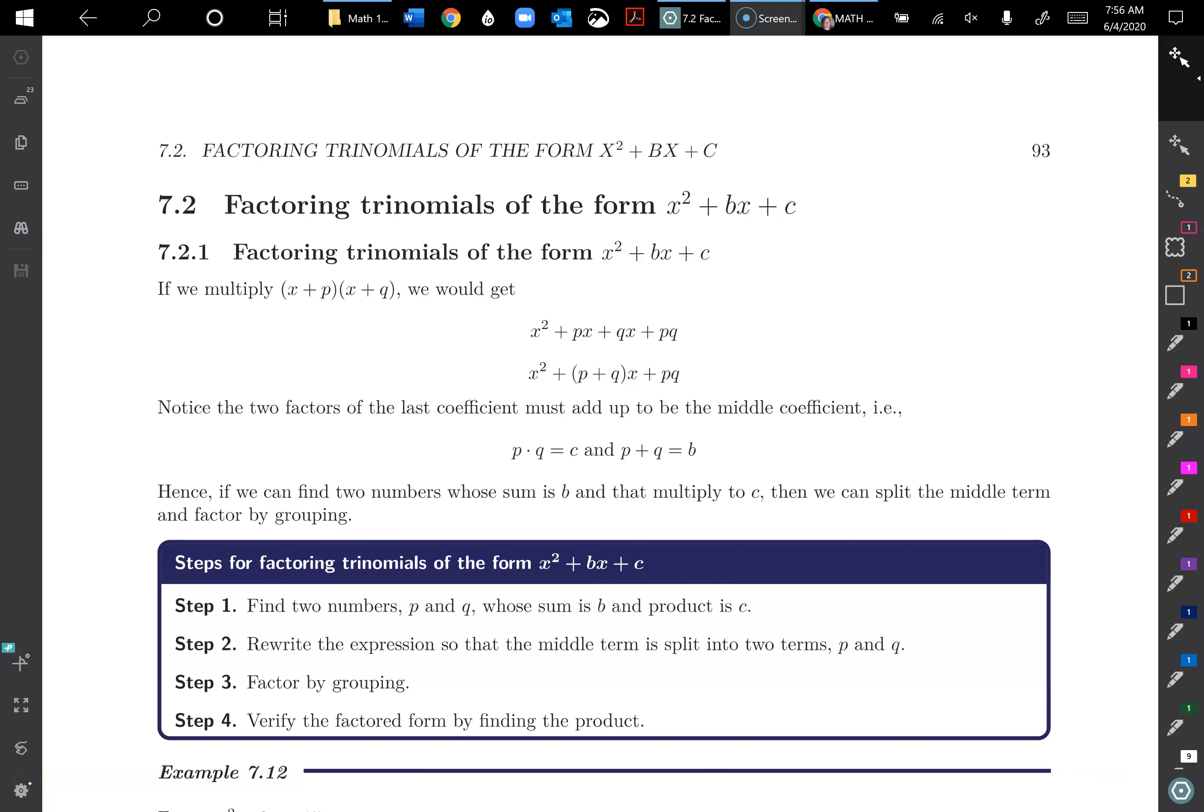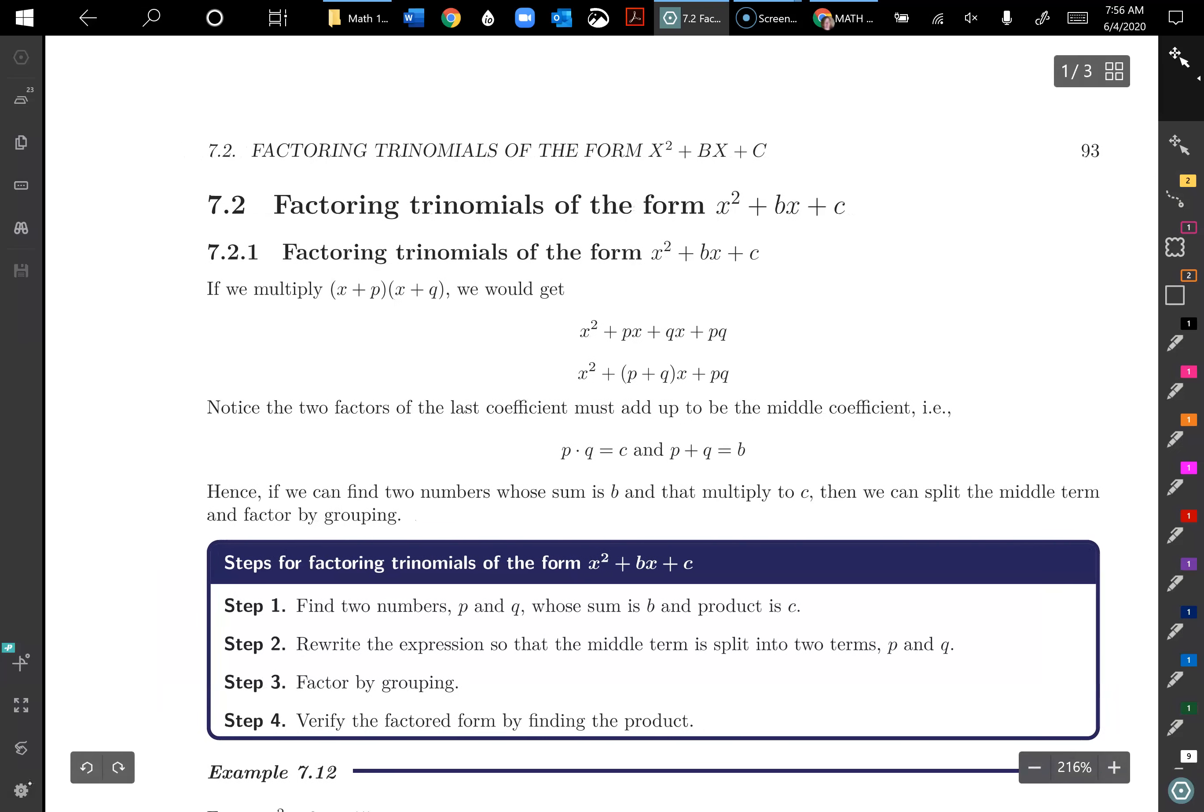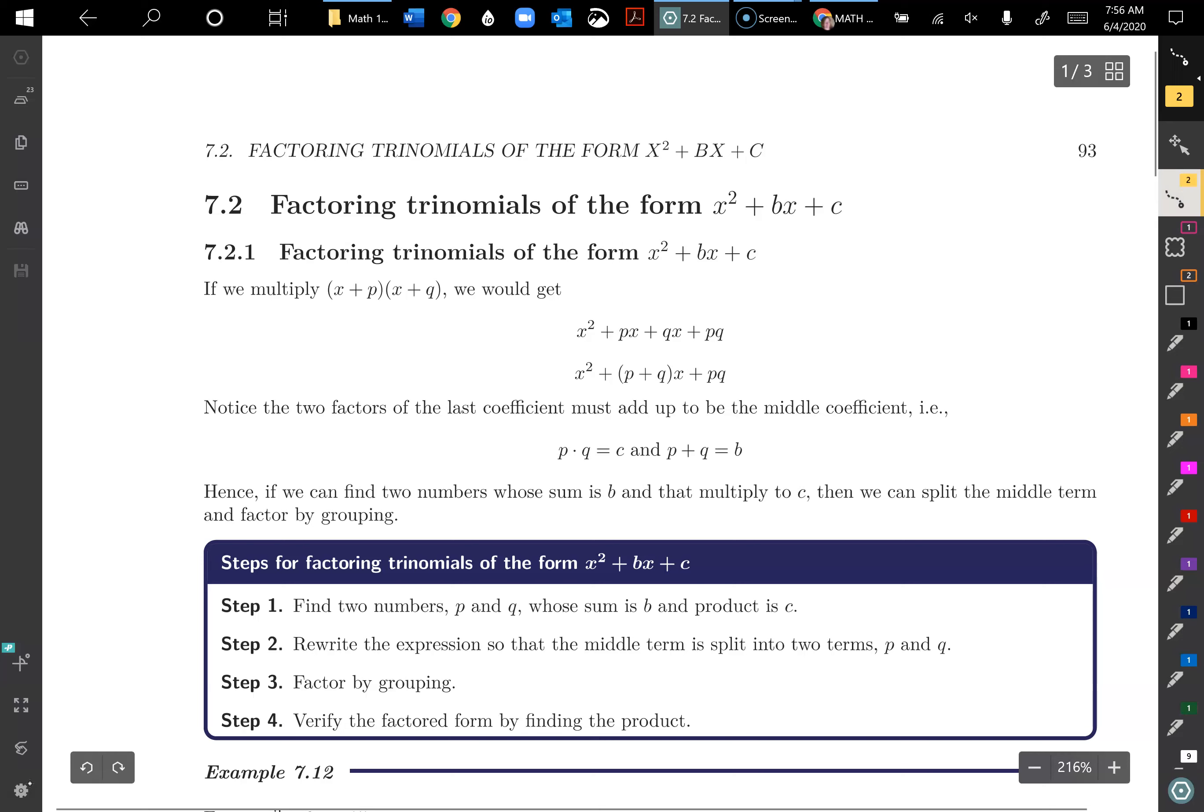Now we're going to look at page 93 in your workbook. It's section 7.2, factoring trinomials of the form x squared plus bx plus c. So this is a trinomial where we have a lead coefficient of 1. It makes it a lot easier to factor that way because you can just kind of reverse FOIL and do it intuitively. But I'm going to show you the way the book does it first, then we'll look at the other methods as well.